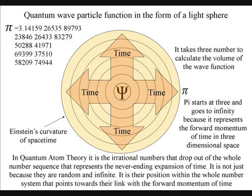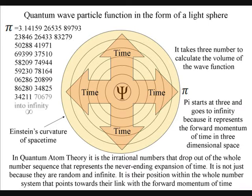In quantum physics, it takes three quantum numbers to calculate the wave function as it expands as an inverse volume of space in the form of a light sphere. The decimal expansion of pi starts at the number three and goes to infinity, representing three-dimensional spacetime.